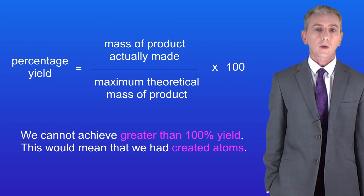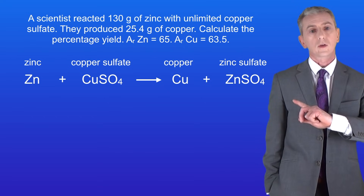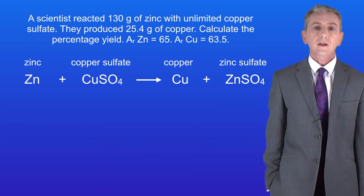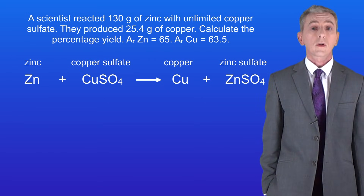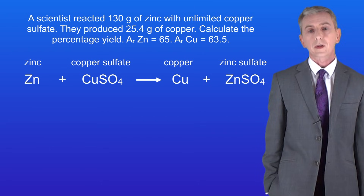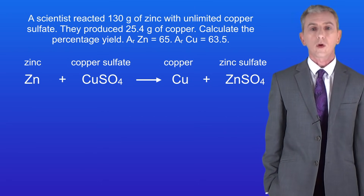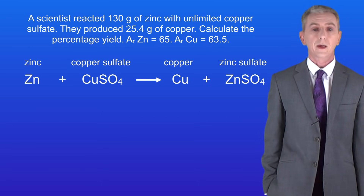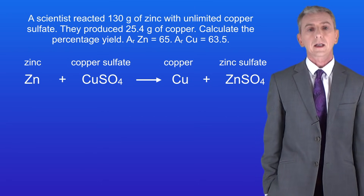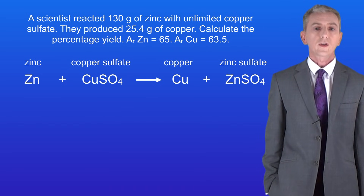So in this video I'm going to give you some examples to try yourself. Here's the first: a scientist reacted 130 grams of zinc with unlimited copper sulphate. They produced 25.4 grams of copper. Calculate the percentage yield. Pause the video now and try this yourself.